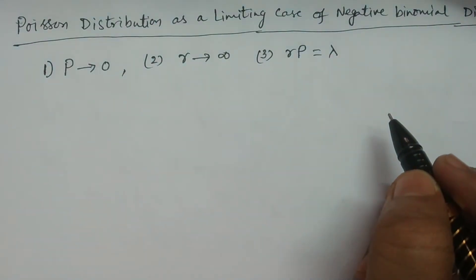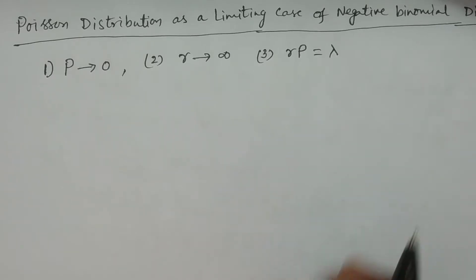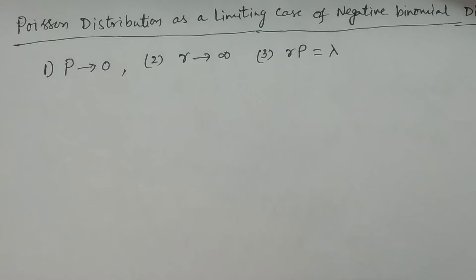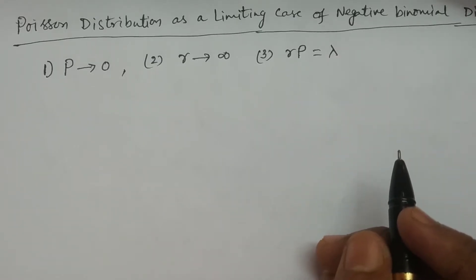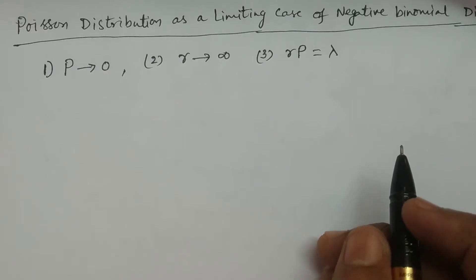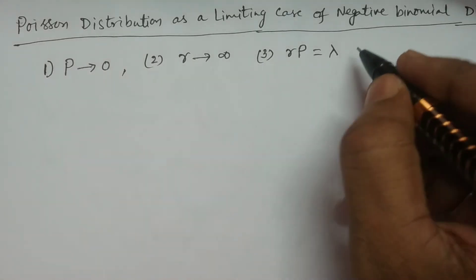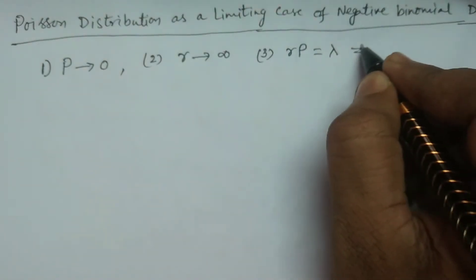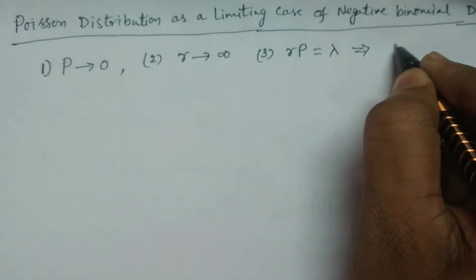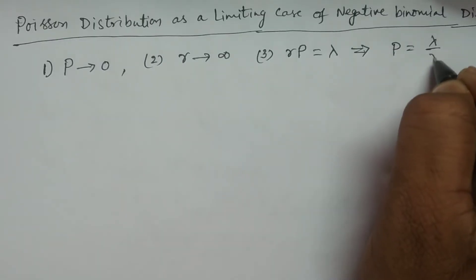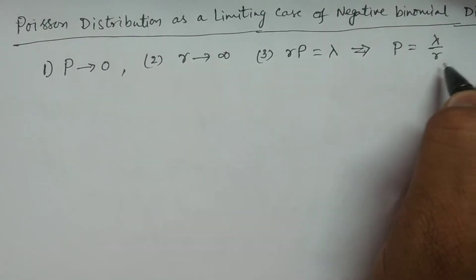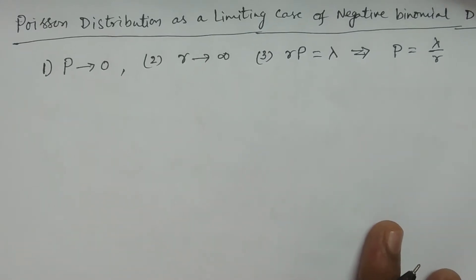These are the 3 important conditions which we consider for negative binomial distribution, under which if you apply these conditions, negative binomial distribution tends to Poisson distribution. The third condition can also be expanded as P is equal to lambda by R, since RP equals lambda.